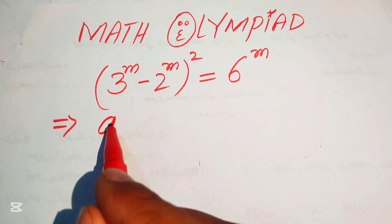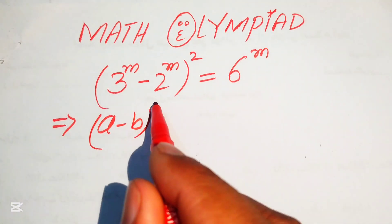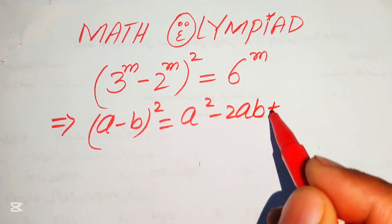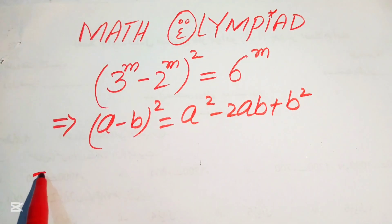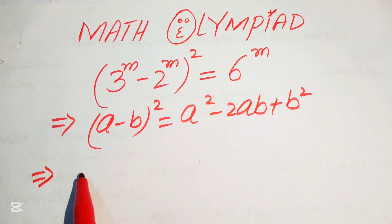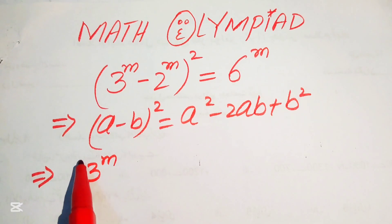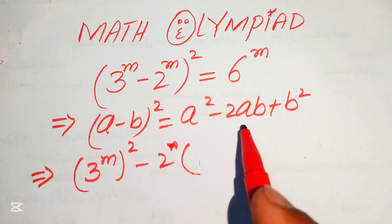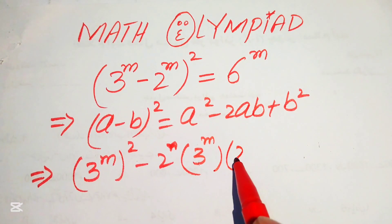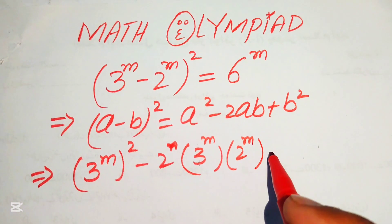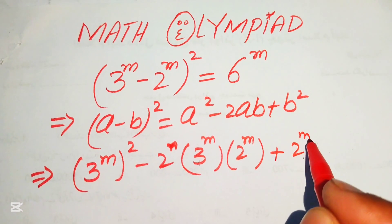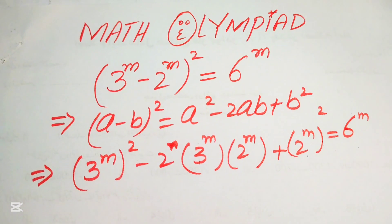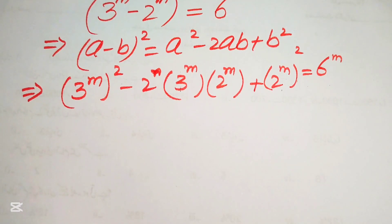We know that (a - b)² = a² - 2ab + b². Applying this formula to the left-hand side, we write it as (3^m)² - 2·(3^m)(2^m) + (2^m)² equals 6^m.